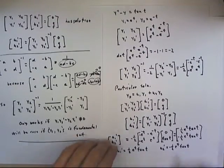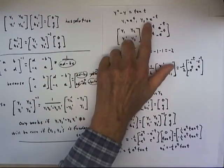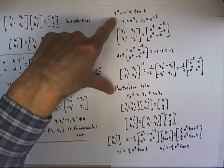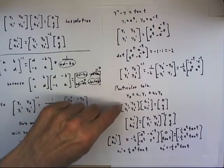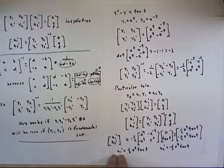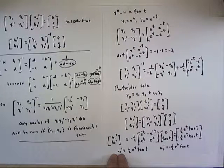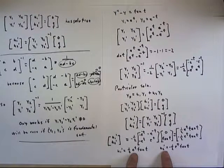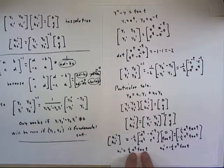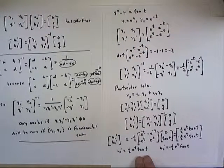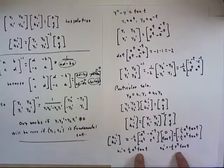And I'll point out finally that any time we have a fundamental set for our homogeneous equation, this method will lead us to equations for u1 prime, or expressions for u1 prime and u2 prime. You might be wondering how we are going to integrate these things, so am I,